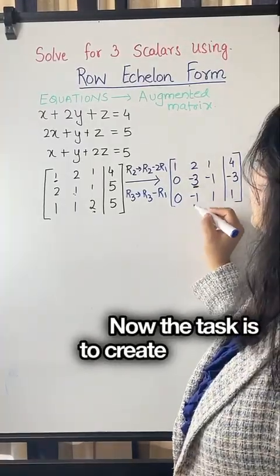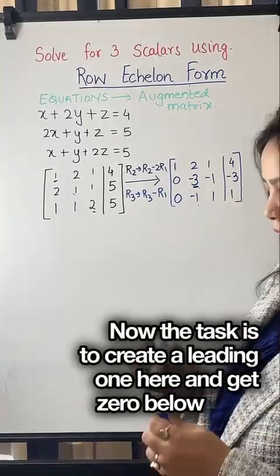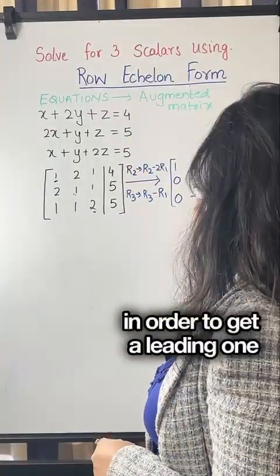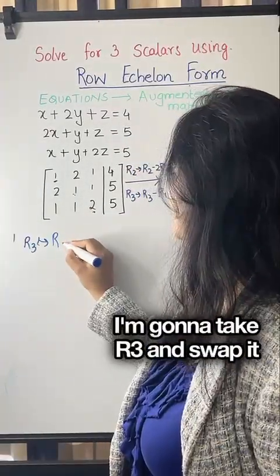Now the task is to create a leading one here and get zero below it. In order to get a leading one here, swap R3 with R2.